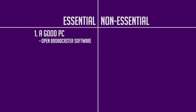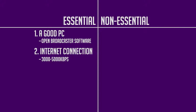Second on the list is, of course, an internet connection. You can't stream or put content on the internet without one. Preferably you have a decent connection that can handle uploading content — the faster your upload speed, the better. An upload speed of anywhere around 3 to 5,000 kilobits per second is probably good if you're just starting out and looking to have semi-decent content.